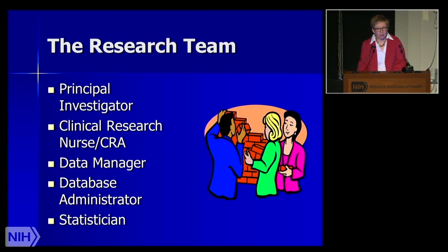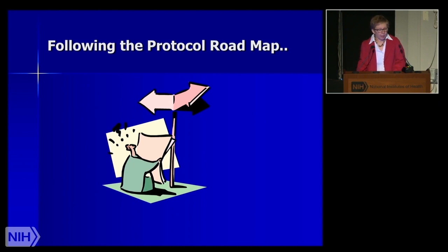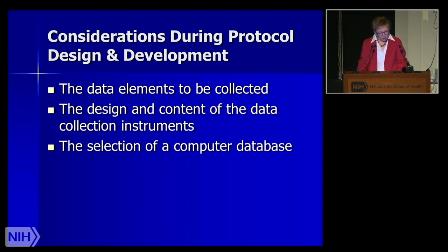Each member of the team plays a key role in conducting research ethically, maintaining confidentiality, following the Code of Federal Regulations, and complying with HIPAA. In order to do that, training is essential. The protocol is often considered a roadmap — a document that includes information about why the study is being done, the hypothesis behind it, the aims, and how the study is going to be conducted to meet those aims. The protocol should contain sufficient detail so that there is uniformity in the selection and treatment of patients and uniform data collection and submission. Things to consider when developing the protocol: what data elements are you going to collect, what is the design and content of the data collection instruments, and what type of computer database are you going to be utilizing?